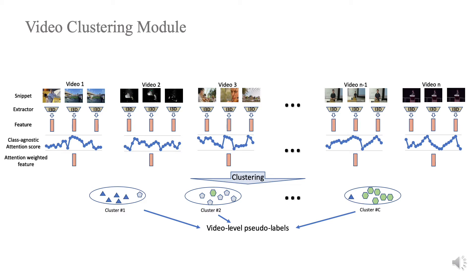Then we combine the class-agnostic temporal attention and snippet-level features to generate action-related features for each video. To get the video-level pseudo-label for each video,